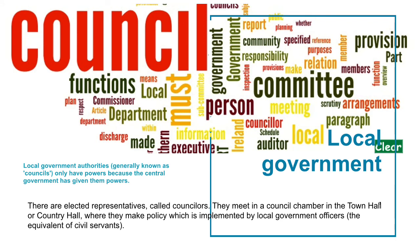Several times in the 20th century, British governments have reorganized local government, abolishing some local councils and bringing new ones into existence. The system of local government is very similar to the system of national government. There are elected representatives called councillors who meet in a council chamber in the town hall or county hall where they make policy, which is implemented by local government officers. Most British people have far more direct dealings with local government than they do with national government.